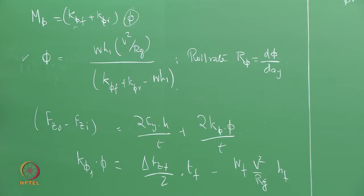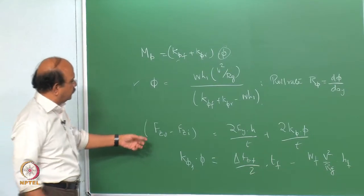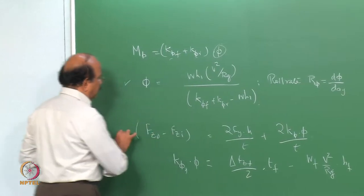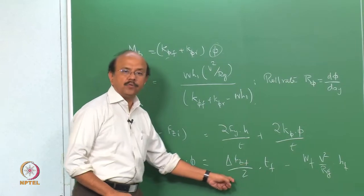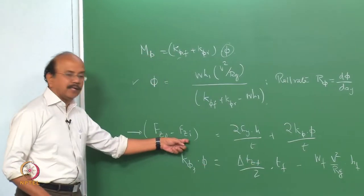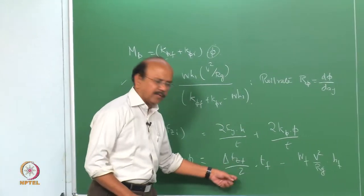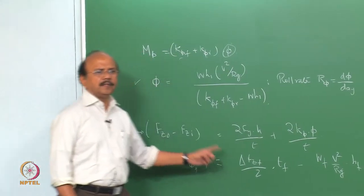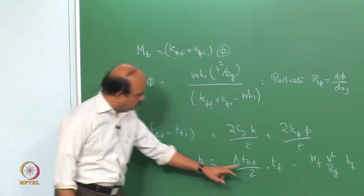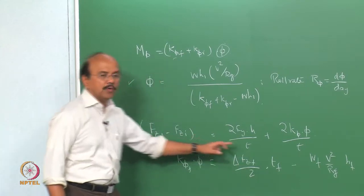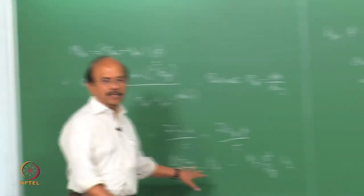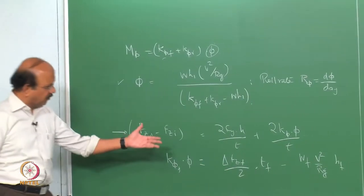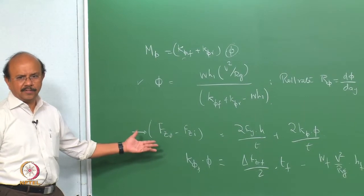Essentially, what we are doing is finding out delta Fz. This we wrote down and called as delta Fz_f by 2. In other words, we call the total as delta Fz and this is delta Fz by 2. There was a small confusion because in Gillespie, this divided by 2 is what is called delta Fz. It does not matter as long as you understand what we mean — these equations are very straightforward.